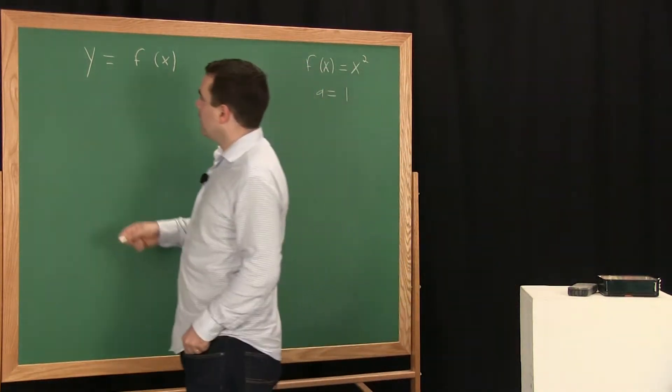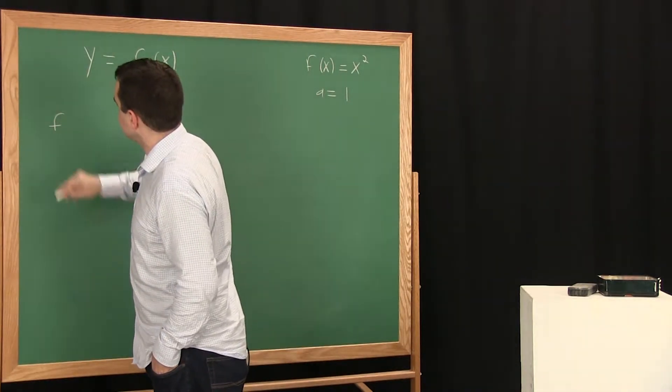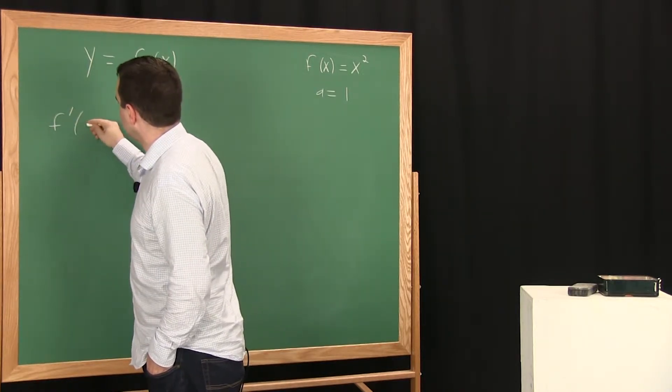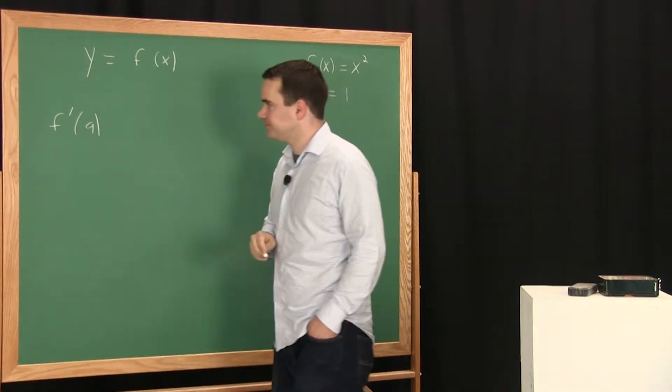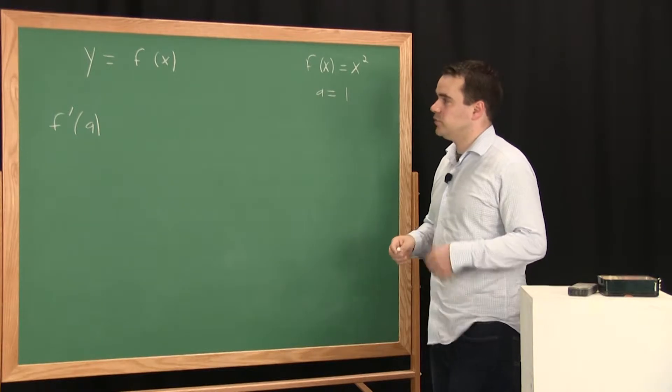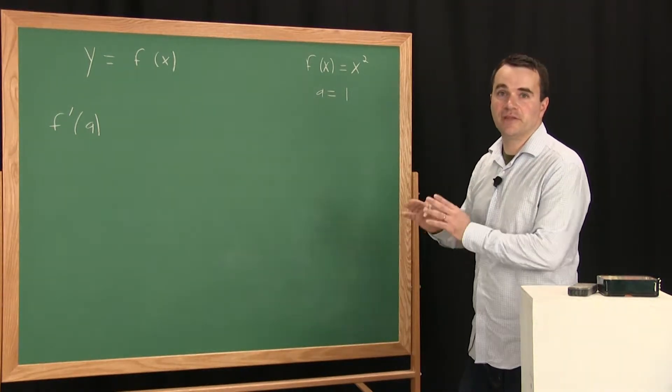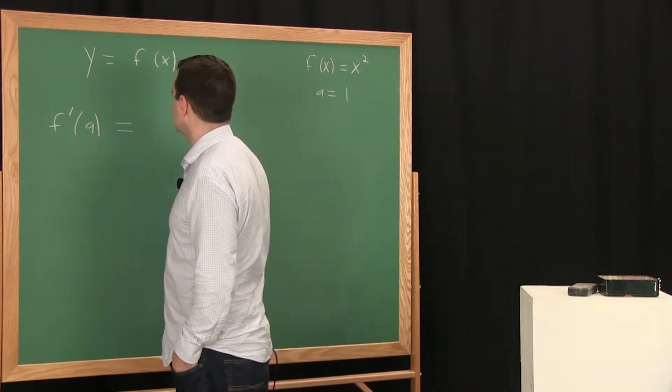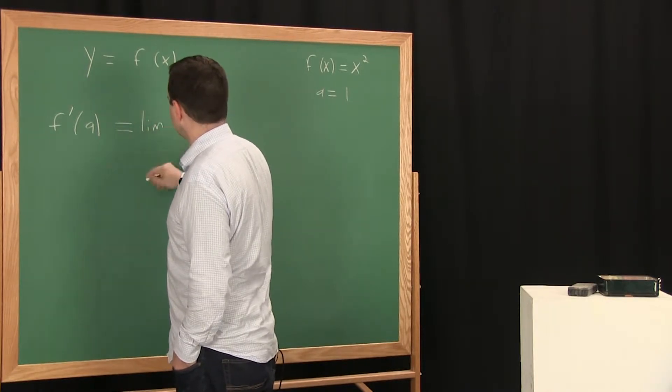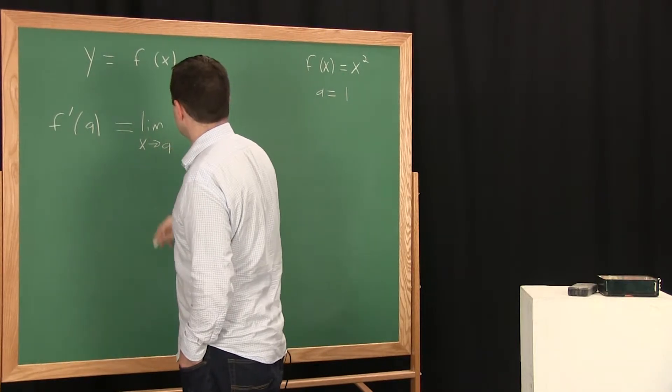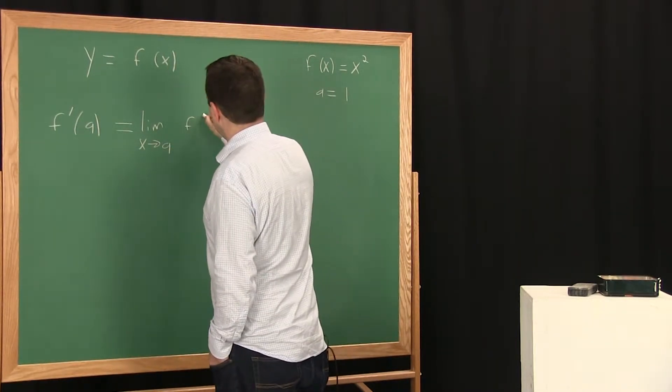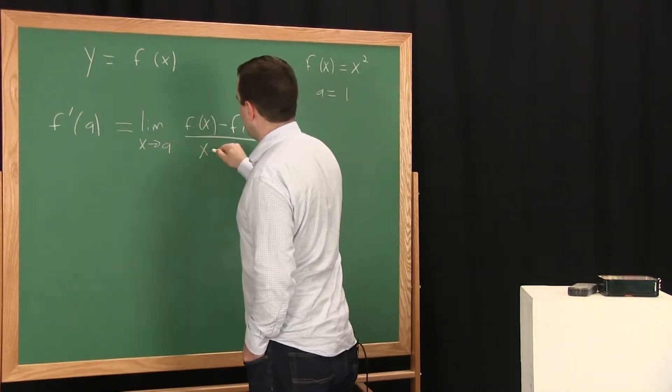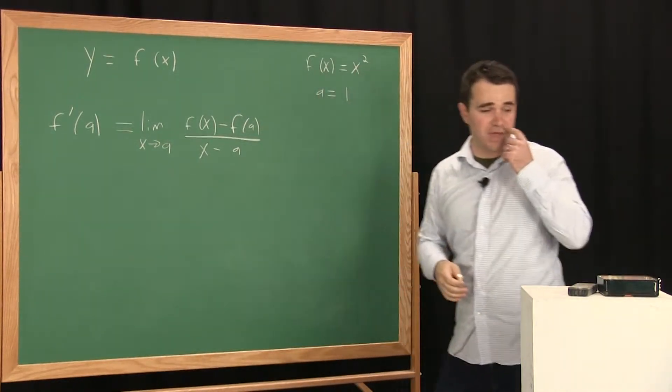And the derivative of function f at the point x equals a is notated by f prime of a. And when you see that, you read that as the derivative of f at the point x equals a. And it's defined to be equal to this limit as x tends towards a of f of x minus f of a all divided by x minus a. So there you have it. That's the definition.